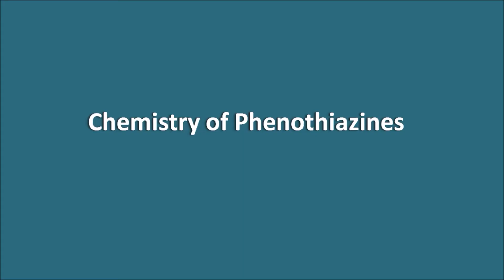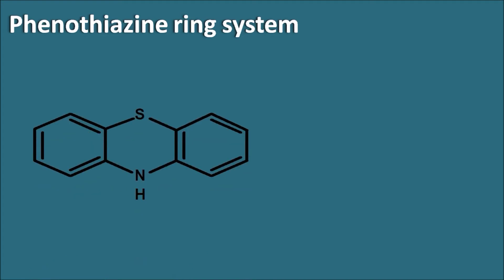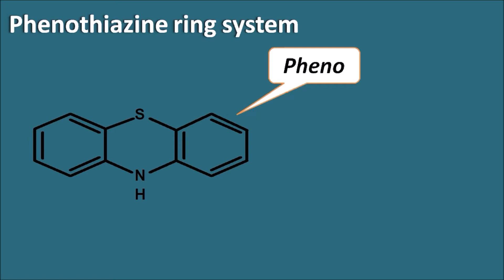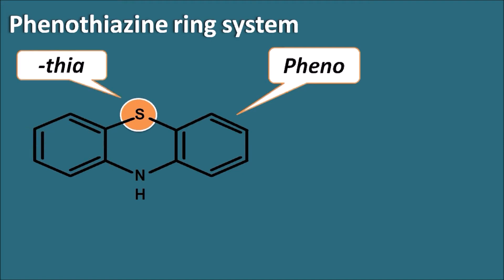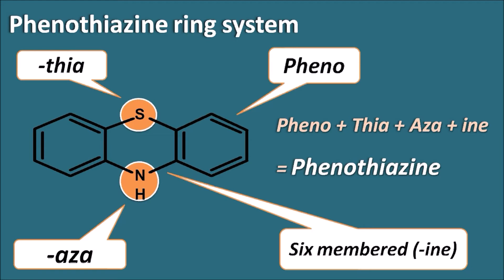Let us see what is the phenothiazine ring system. It has different components: a phenyl group attached on both sides, represented by the prefix 'pheno'. Sulfur is represented as 'thia', nitrogen as 'aza', and the six-membered ring containing nitrogen is indicated by the suffix 'ine'. Combining all these: pheno + thia + aza + ine gives us phenothiazine — that is how the name is derived from this ring system.